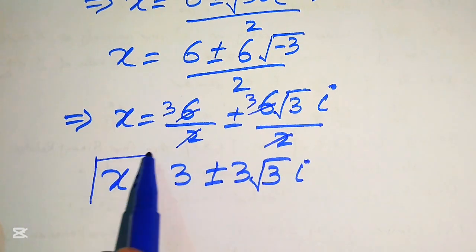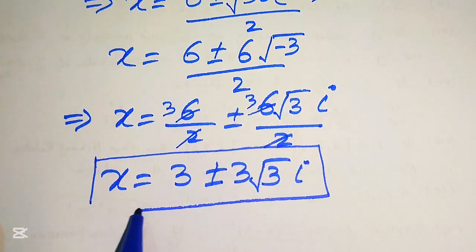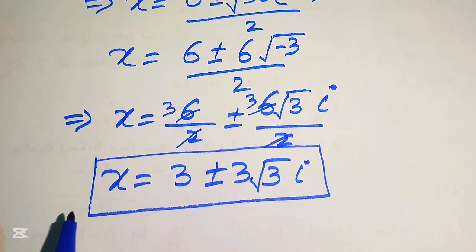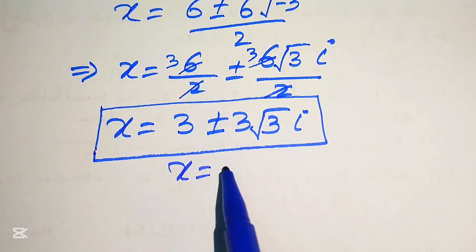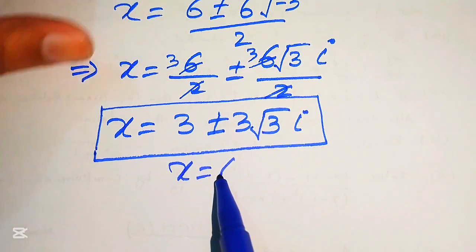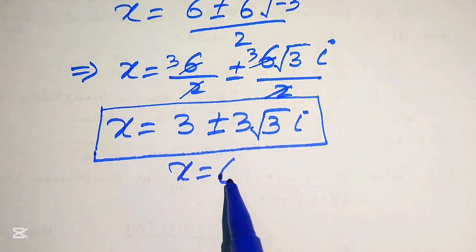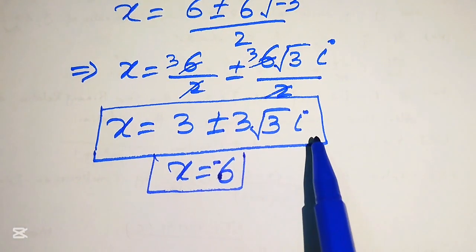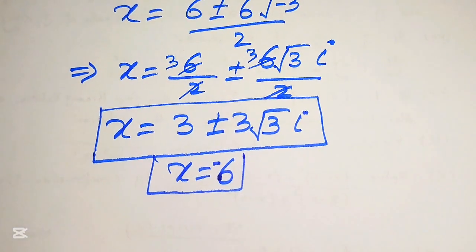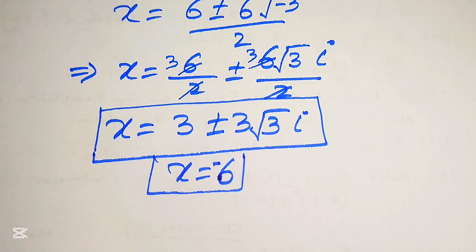These are the other two complex roots from equation 2. In total, from equation 1 we obtained three roots and from equation 2 we obtained three roots, giving six roots in all. This is the final answer. Thank you for watching this video — please subscribe to my channel for more exciting videos.